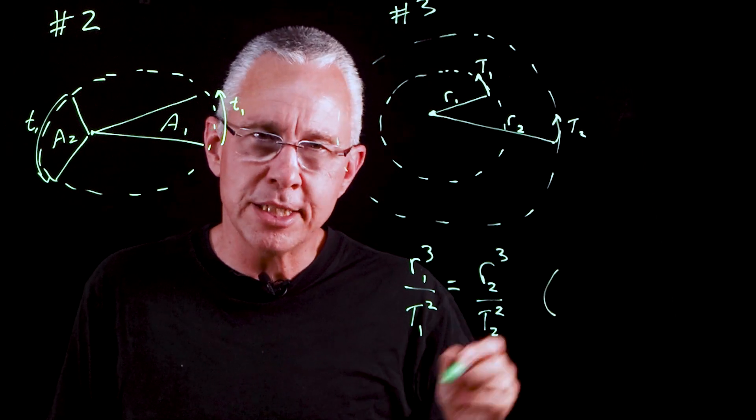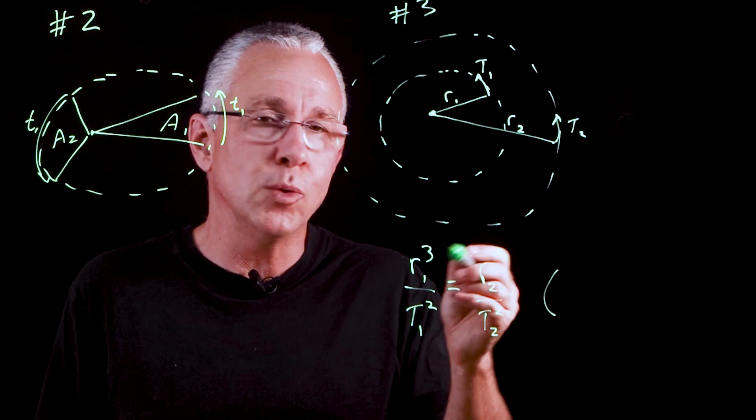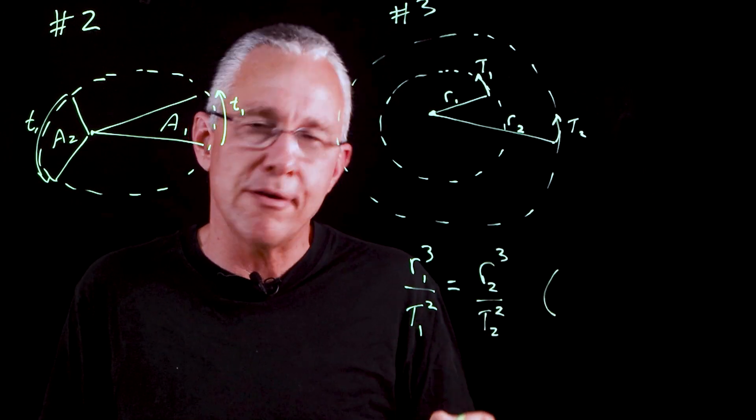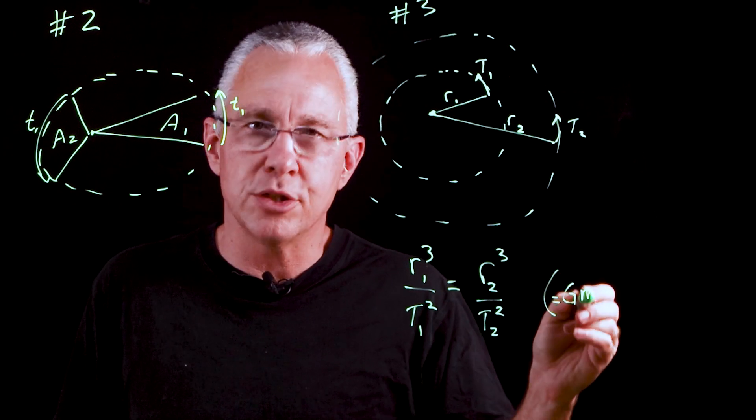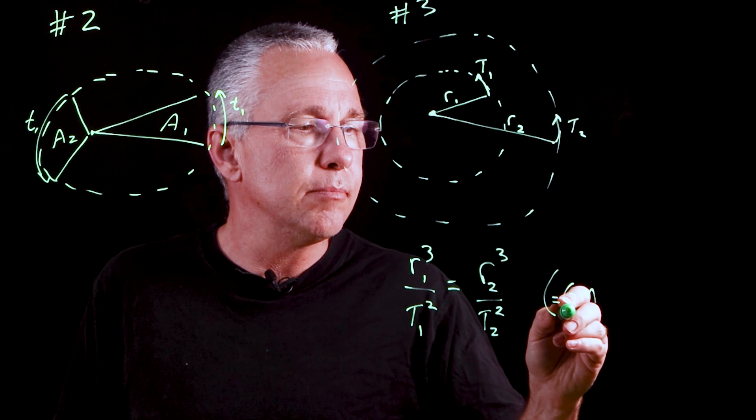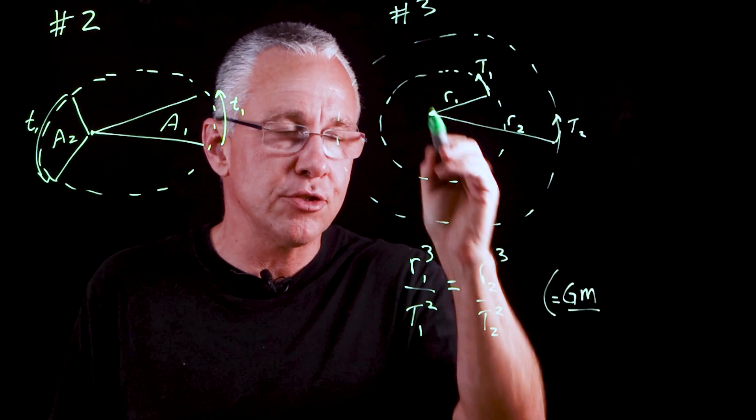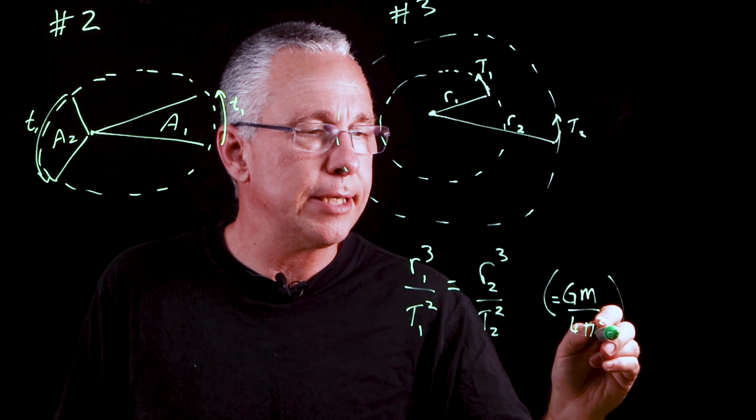Now just as a side note, it was Isaac Newton using the law of gravitation who worked out actually the value of that ratio, and that ended up being equal to capital G, which is the gravitational constant, multiplied by M, which is the mass of the central body, divided by 4π².